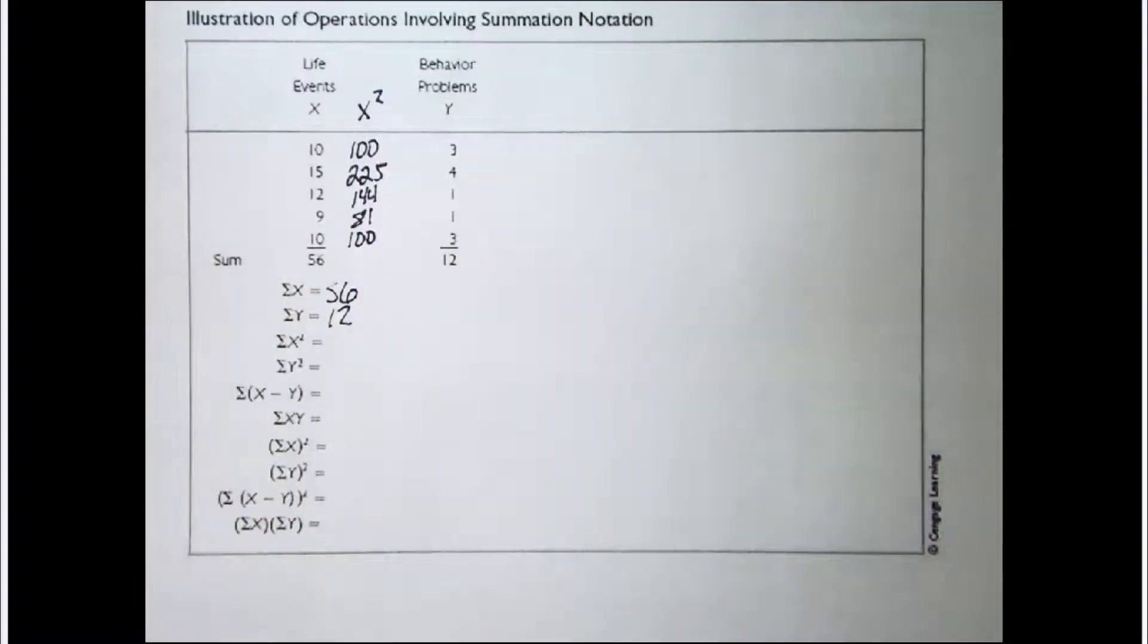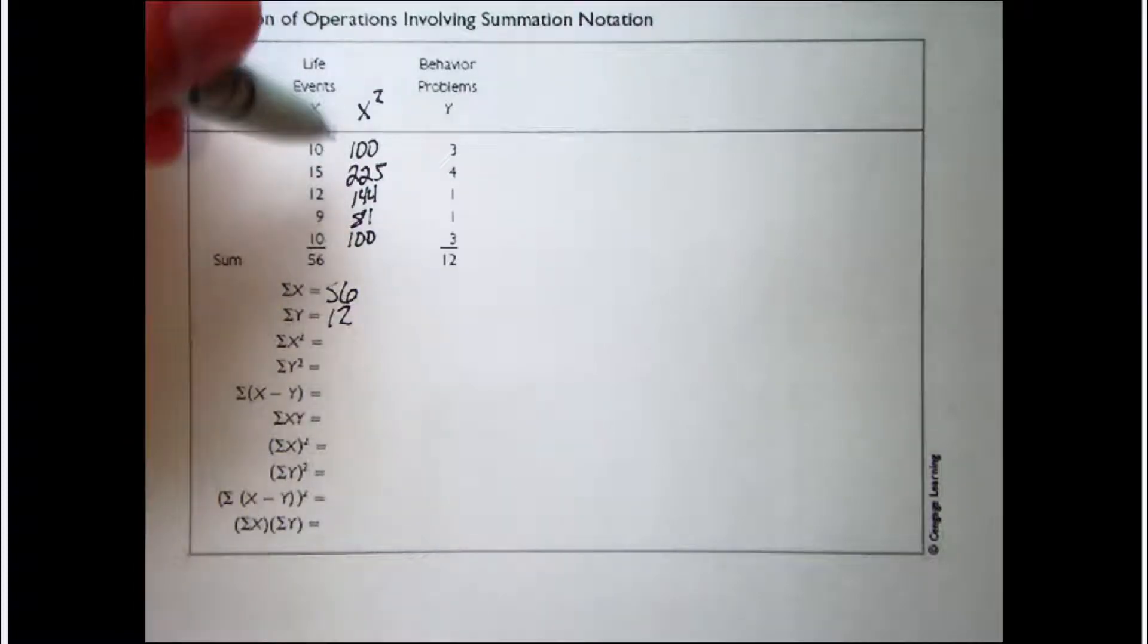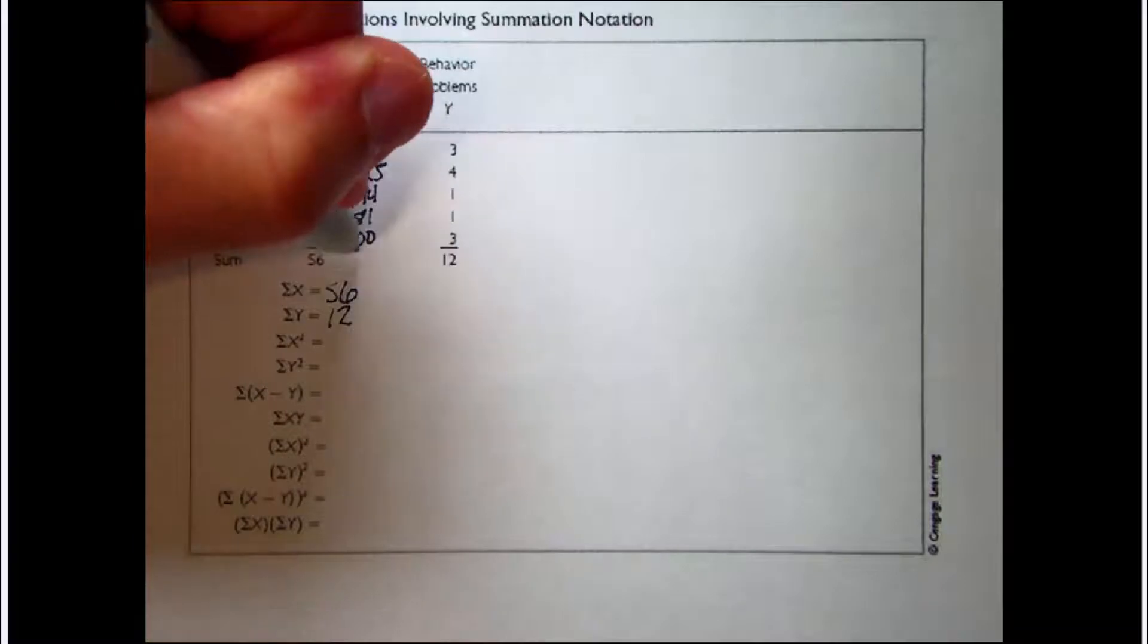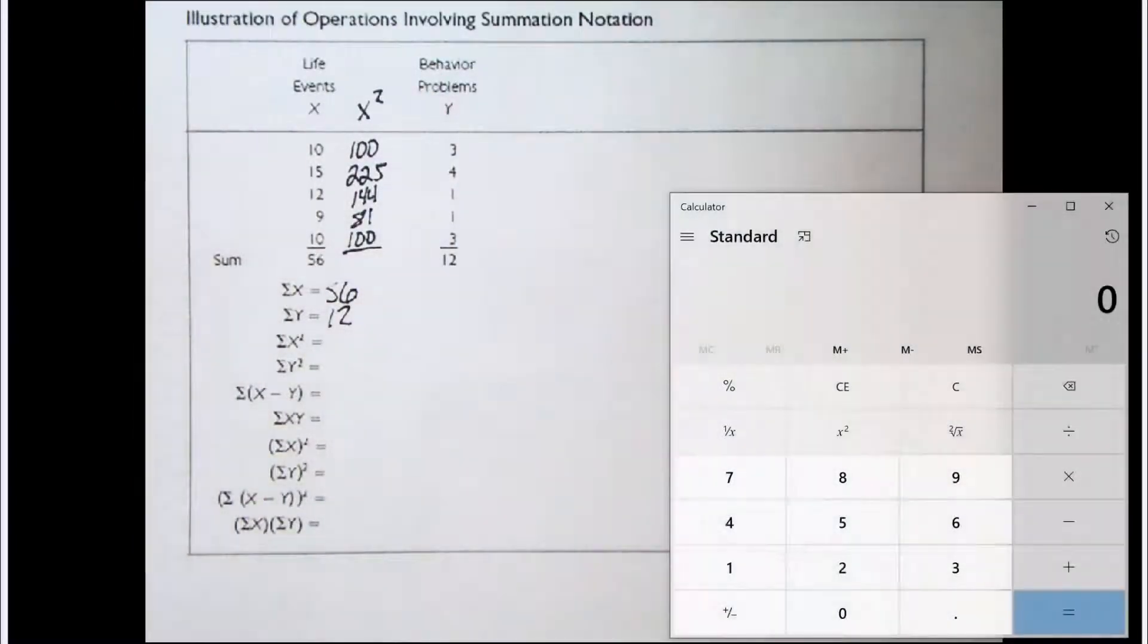All right, so that was step two. We created a column, and we squared all of our values. Now we need to determine if we're ready for step three. So we need to ask ourselves, do we have a column labeled with what we've been asked to sum up? And we do. We've been asked to sum up squared X values. We have a column labeled X squared, so now it's time to sum it up. Let's get a little bit of help from our calculator. We've got 100 plus 225 plus 144 plus 81 plus 100. That equals 650.